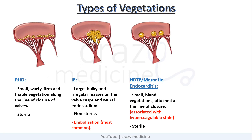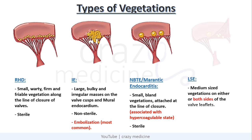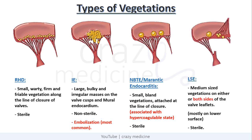Last is Libman-Sacks endocarditis. It shows vegetations on either or both sides of the heart valves, i.e., the upper and lower surface, but mostly they are present on the lower surface of the valves.